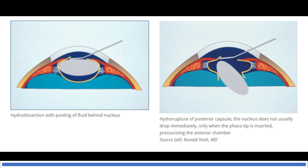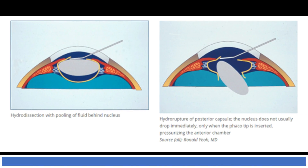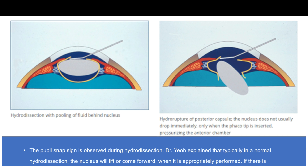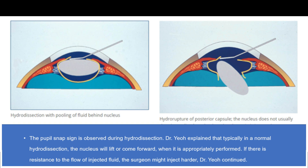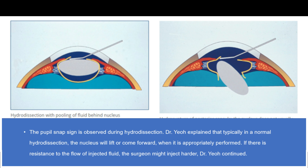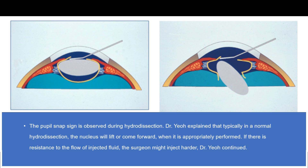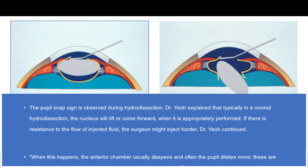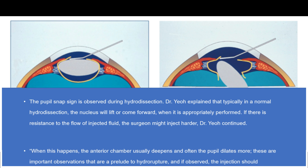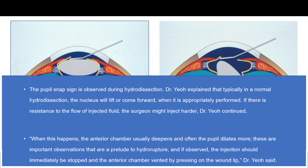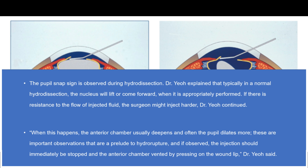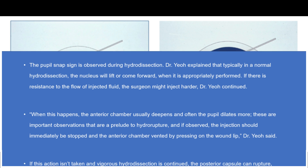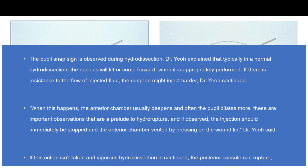It is observed during hydrodissection. In normal hydrodissection, the nucleus will lift or come forward when properly performed. But if there is resistance to the flow of injected fluid, the surgeon might inject more, and when this happens, the anterior chamber usually deepens and often the pupil dilates more.